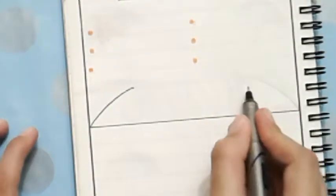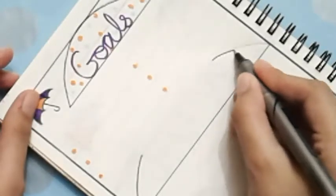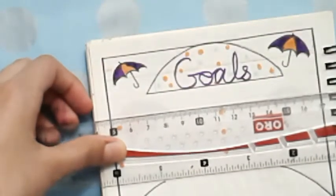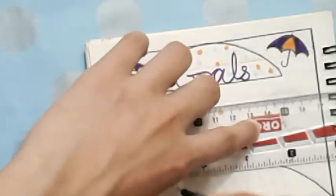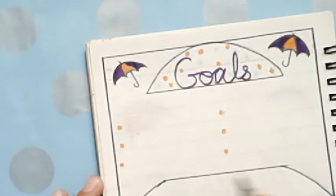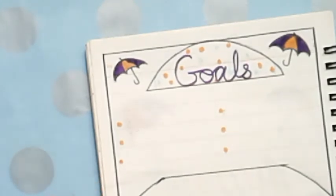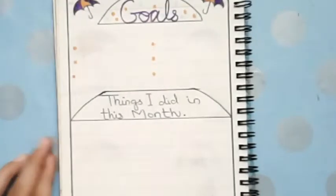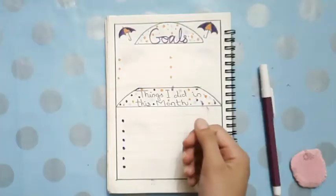It's also a kind of umbrella shape. Over here I'm going to mention the things I've done in this month. Like you can mention all the things that you did or any special events or something. So you can mention the things.